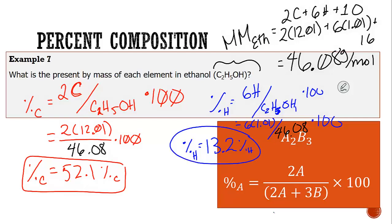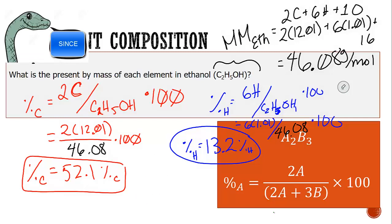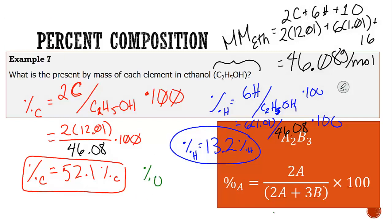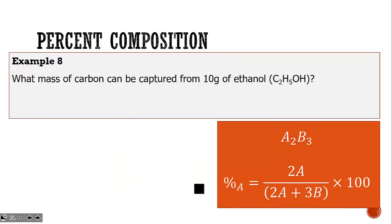For oxygen, we could take the molar mass of oxygen and divide by 46, or we could just subtract from 100 since percent composition is a percentage. Subtracting 13.2 and 52.1 from 100 gives us 34.7% oxygen.